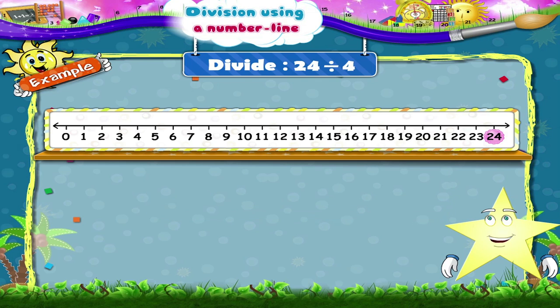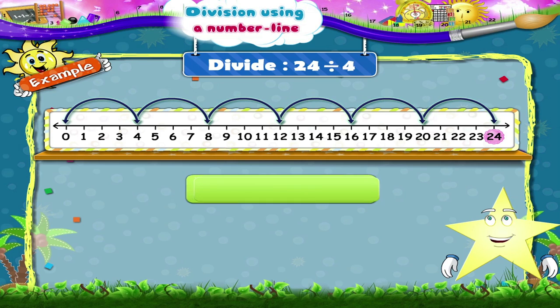Starry, can you tell how many jumps are needed to reach 0? Yes, 6 jumps. So, 24 divided by 4 is equal to 6.